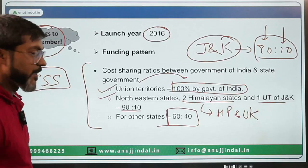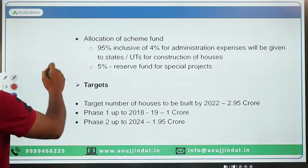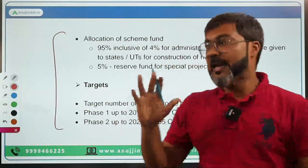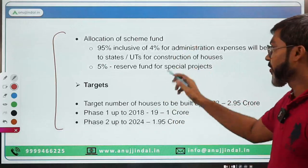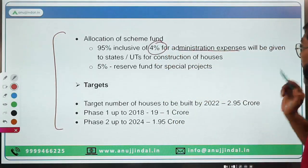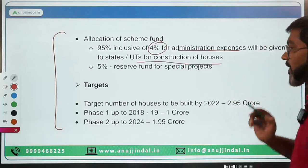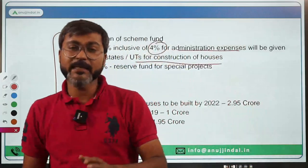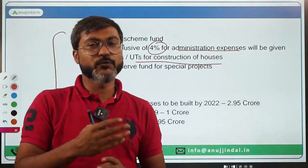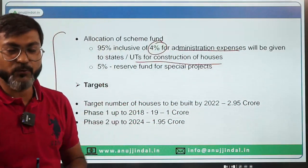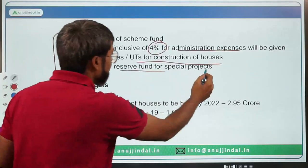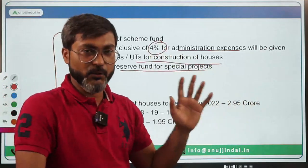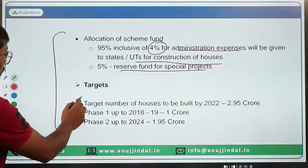Regarding allocation of scheme funds: 95% of the fund — which includes 4% for administrative expenses — is given to states or UTs for construction of houses. The remaining 5% is reserved for special projects.